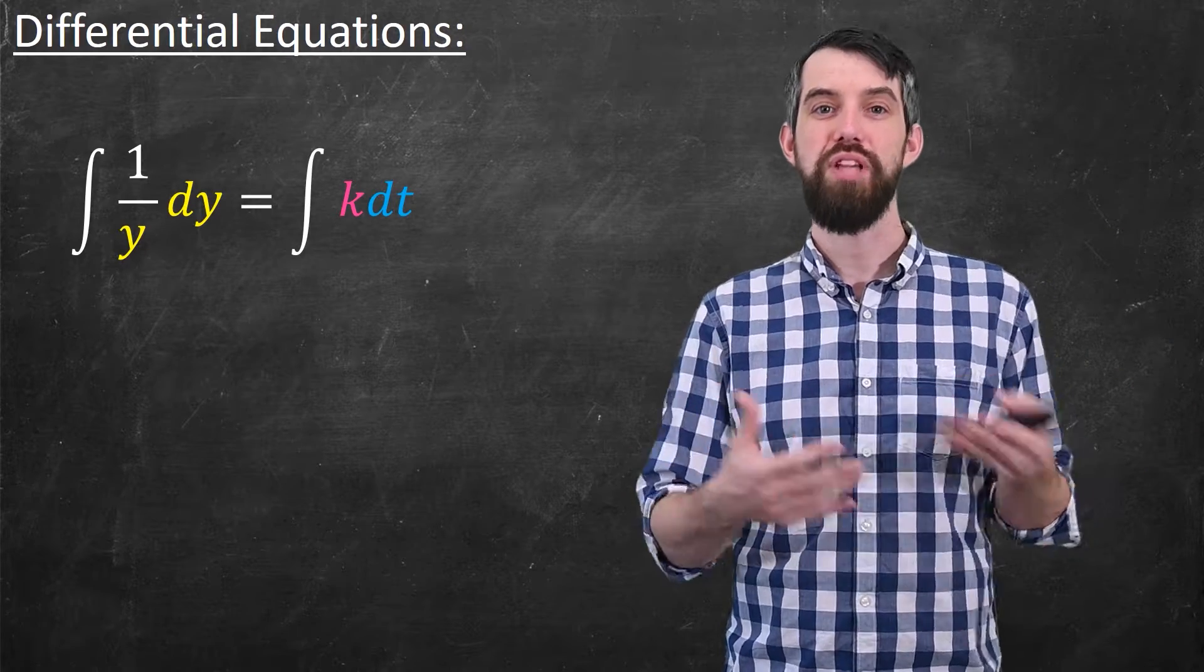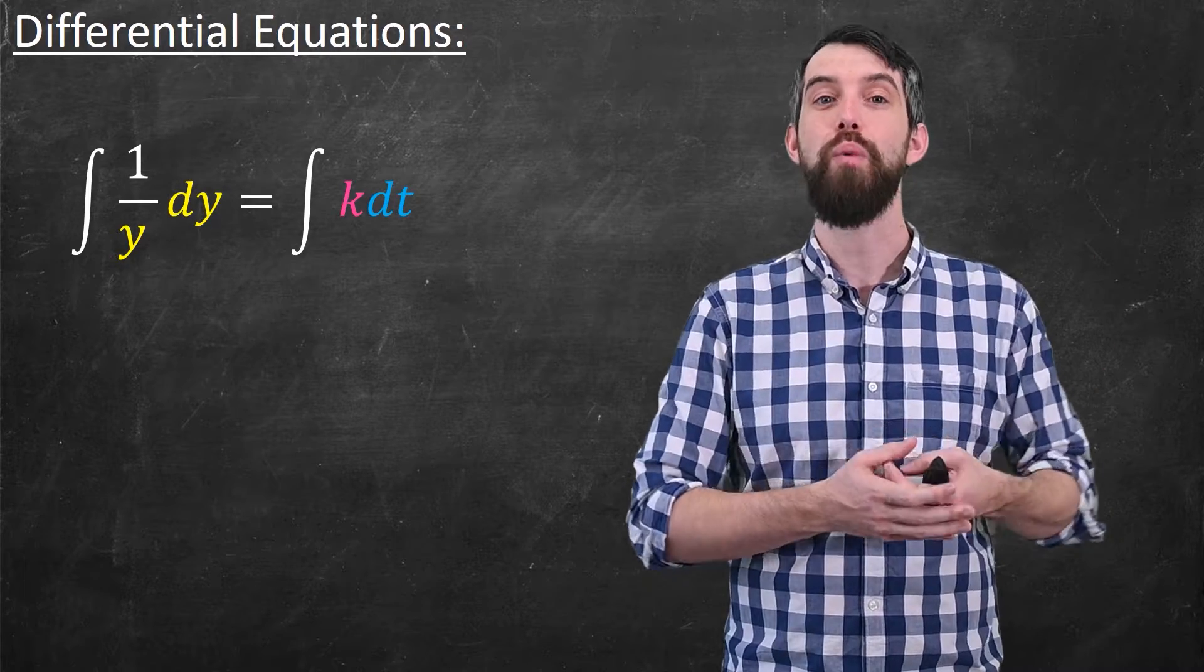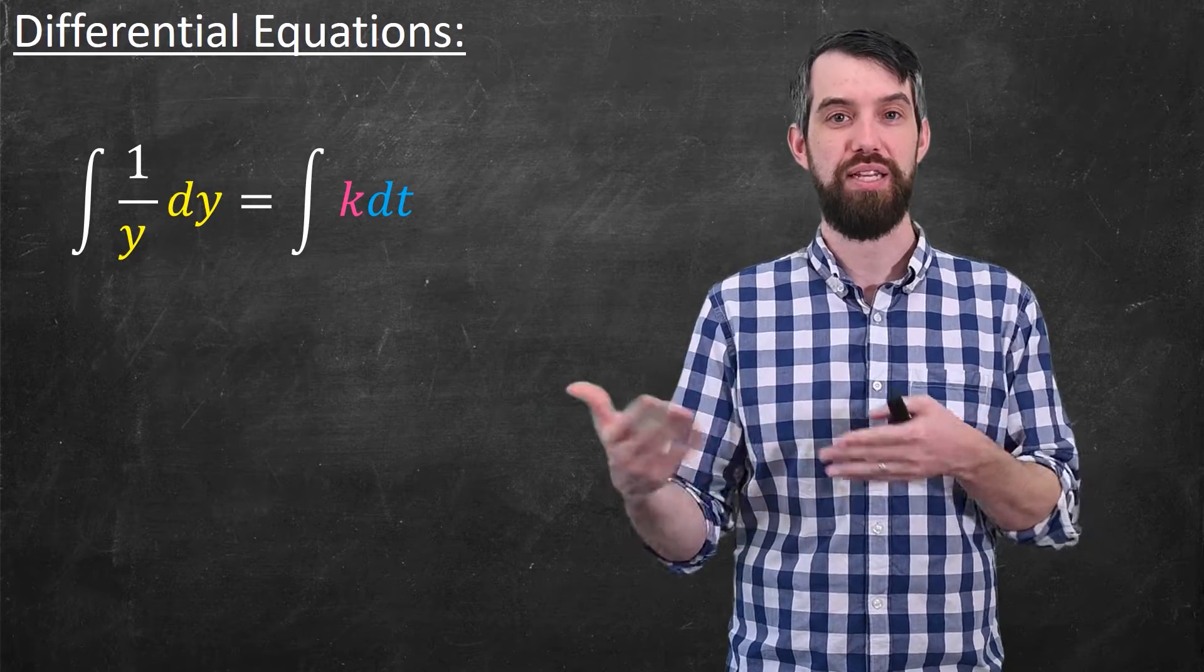This differential dy is just defined to be what you would get from chain rule, the y prime dt. The reason I've done this is that the left integral can now just be thought of some function of y integrated with respect to y, whereas on the right, I have some function, just the function k, integrated with respect to t.